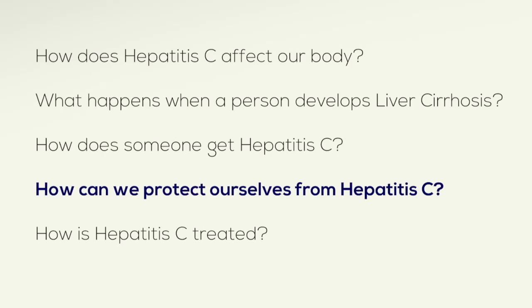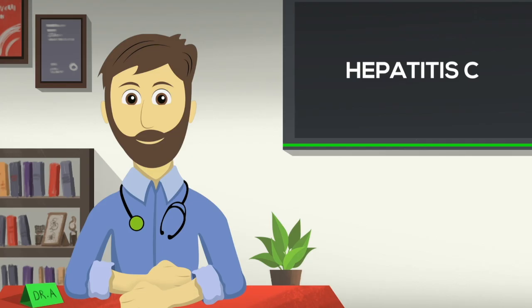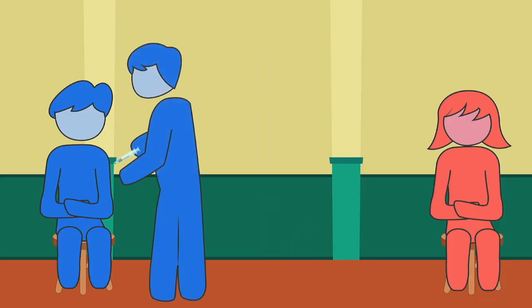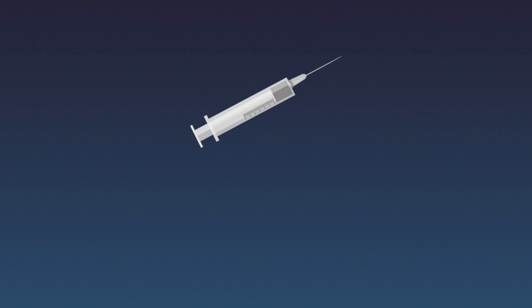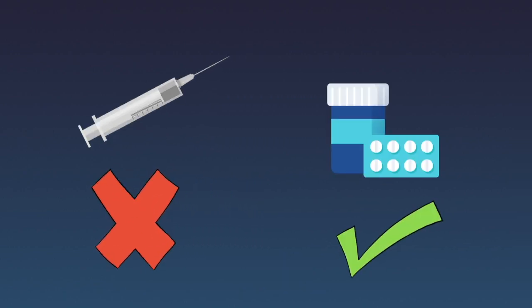How can we protect ourselves from hepatitis C? Hepatitis C can be prevented if we take good caution. Most importantly, never share needles with anyone. Avoid injections and drips when you can take medicine as a pill. Unnecessary use of IV medicines is a common reason for infection where needles are reused or not disposed properly.